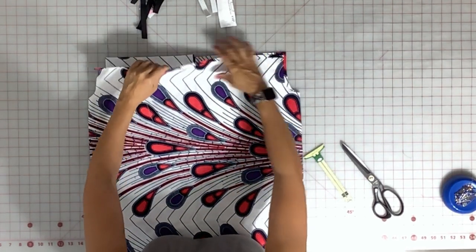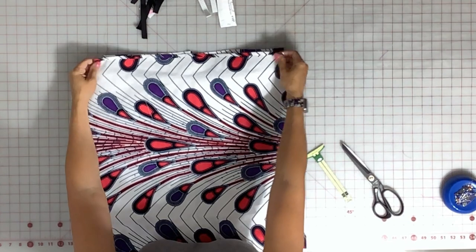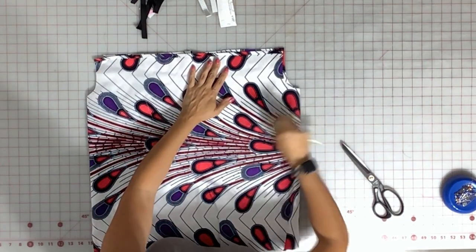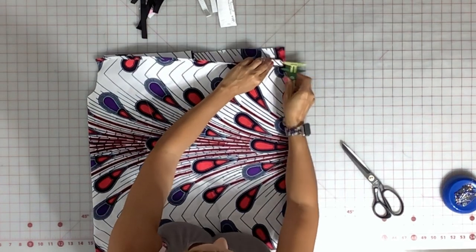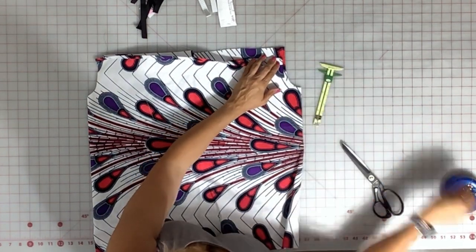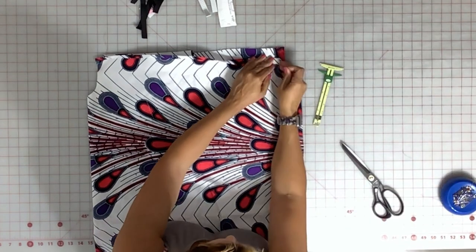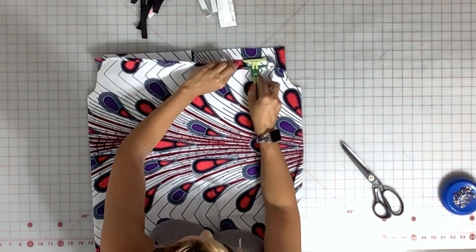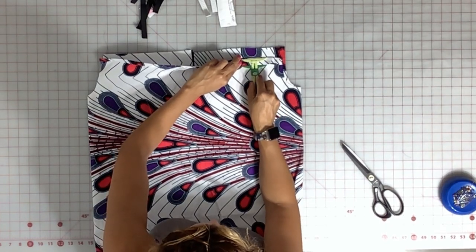Okay, now we're back. I've pressed the edge on the front here. And so now we're going to measure three quarters of an inch. Now I'm going with three quarters of an inch because my elastic is half an inch. So I want that extra quarter inch to give myself a little bit of space to be able to slide that elastic into the casing.